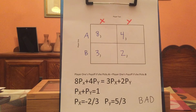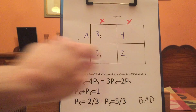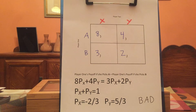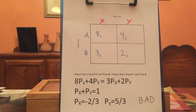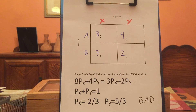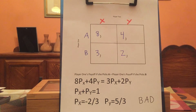Let's see what would make player one willing to randomize with these payoffs. Something should look wrong to you: A is a dominant strategy. If X is played, you're better off with A than B. If Y is played, you're better off with A than B. So if A is a dominant strategy, player one should always want to play A — what could possibly convince player one to be willing to randomize? Well, nothing — but let's use the same procedure as the last two examples.